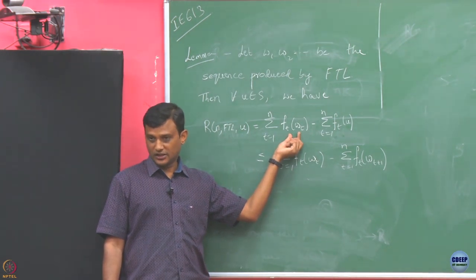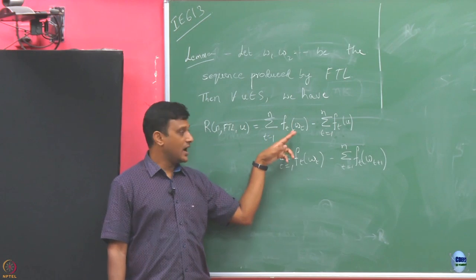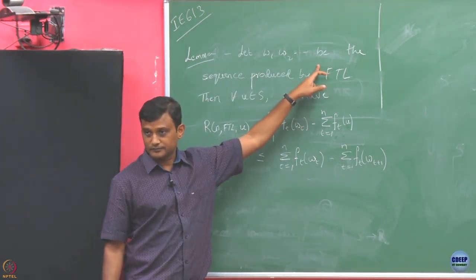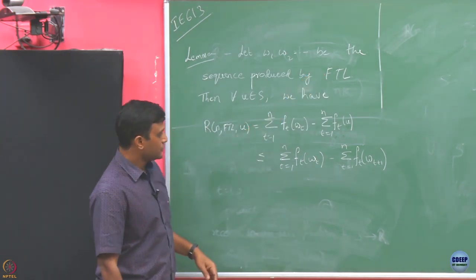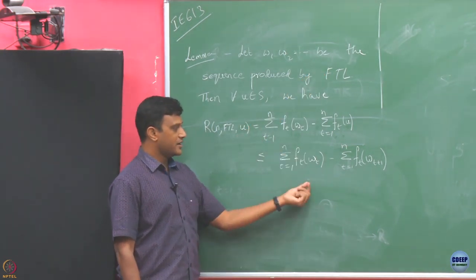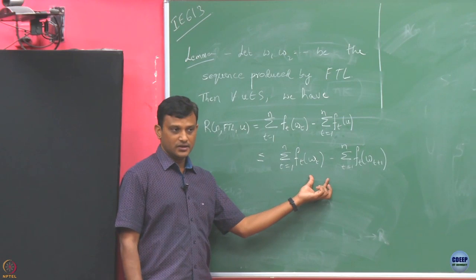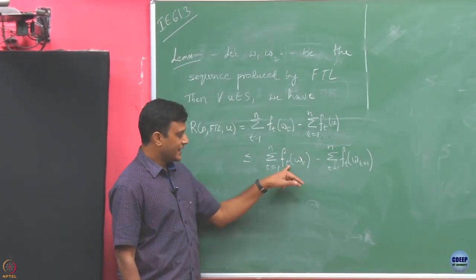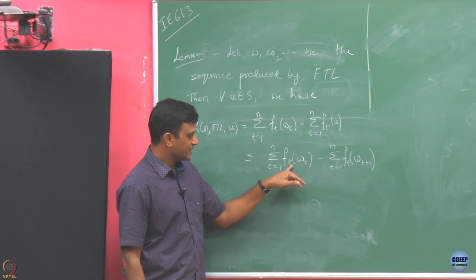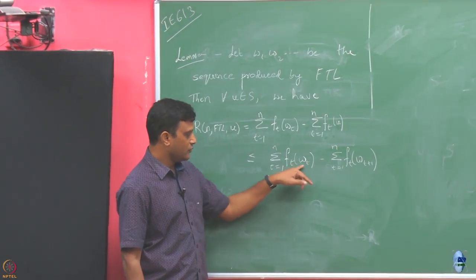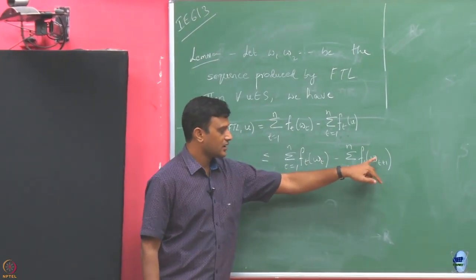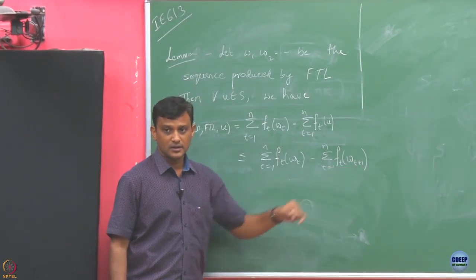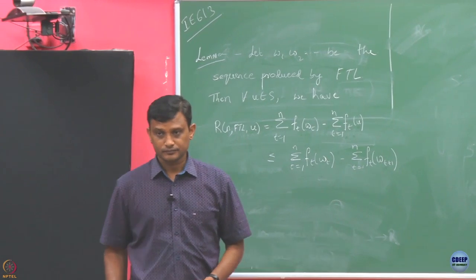I am going to compare this loss with whatever loss you incur by your algorithm. W_1 through W_T are the ones selected by your algorithm. We are going to argue that this is upper bounded by a quantity which at every T is basically F of T at W_T minus F of T computed at W_{T+1}.